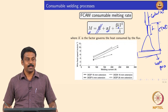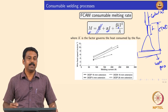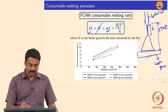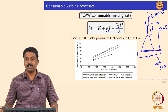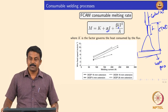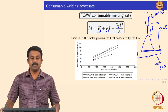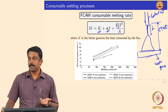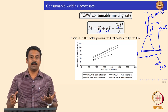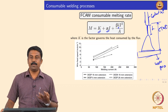In a constant arc length case, at a given CTWD your stick-out length L is determined by your melting rate. In conventional GMAW we use an I plus I² relationship, whereas in FCAW we also need an additional term because heat is also consumed by the flux.